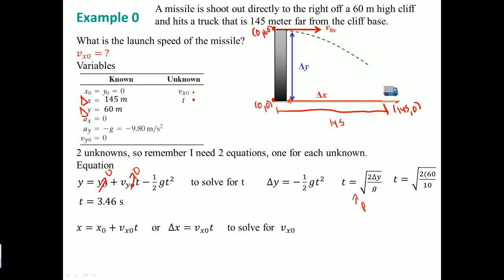The time is positive because the negative signs cancel. Now use the horizontal equation: x = x₀ + vx₀·T. Since x₀ is zero, rearranging gives vx₀ = Delta X / T. Plugging in 145 meters divided by 3.46 seconds, the initial velocity in the x-direction is approximately 42 meters per second.